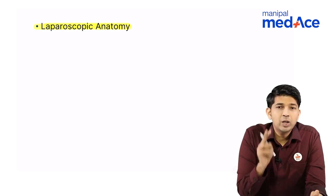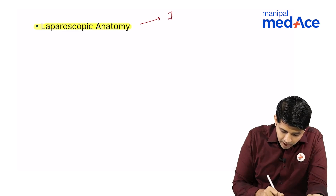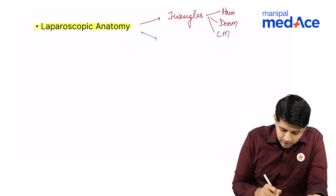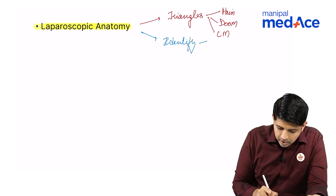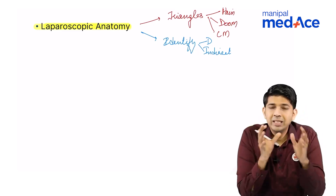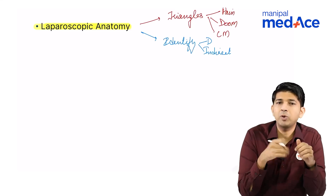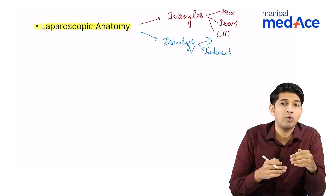This is the basic anatomy I want you to remember, and it will help us a lot especially when we talk about the laparoscopic anatomy of the inguinal region. Two important questions can arise from this: first, they will ask you about the various triangles — triangle of pain, triangle of doom, and corona mortis. Second, they will ask you to identify direct and indirect hernia. That is why I want you to understand the laparoscopic anatomy, because till now we have only seen the anatomy from the outside and not from the inside.